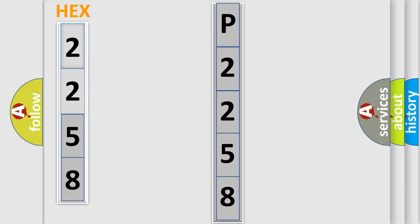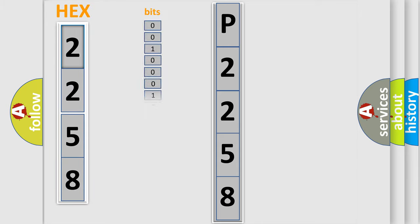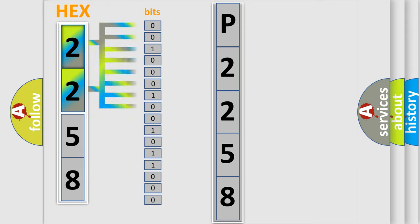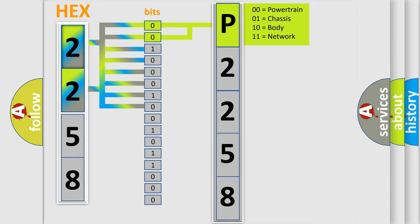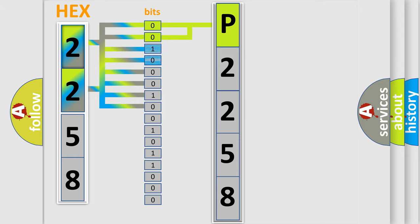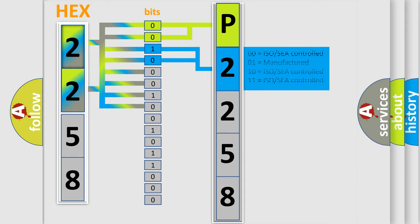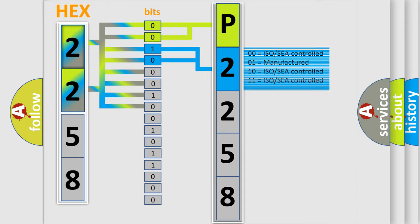The error code is split into two bytes consisting of 16 bits. One bit is the basic unit that each computer works with. The bit has two logical states: zero, low level, and one, high level. By combining the first two bits, the basic character of the error code is expressed. The next two bits determine the second character, and the last bits of the first byte define the third character of the code.